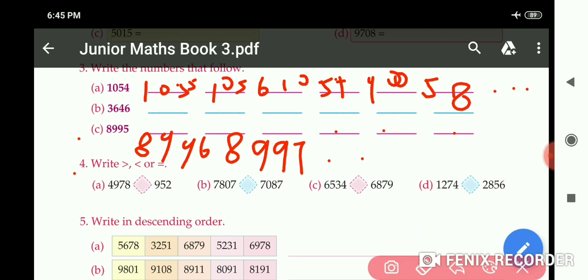Now question number 4: Write greater than, less than, or equals to sign. We compare the numbers and then we put the sign. Part A: 4978 and 952, so this is greater. Part B: 7807 and 7087, this is greater. Part C: 6,534 and 6,879, this is greater. Part D: 1,274 and 2,856, here this is greater. We put the sign like this.